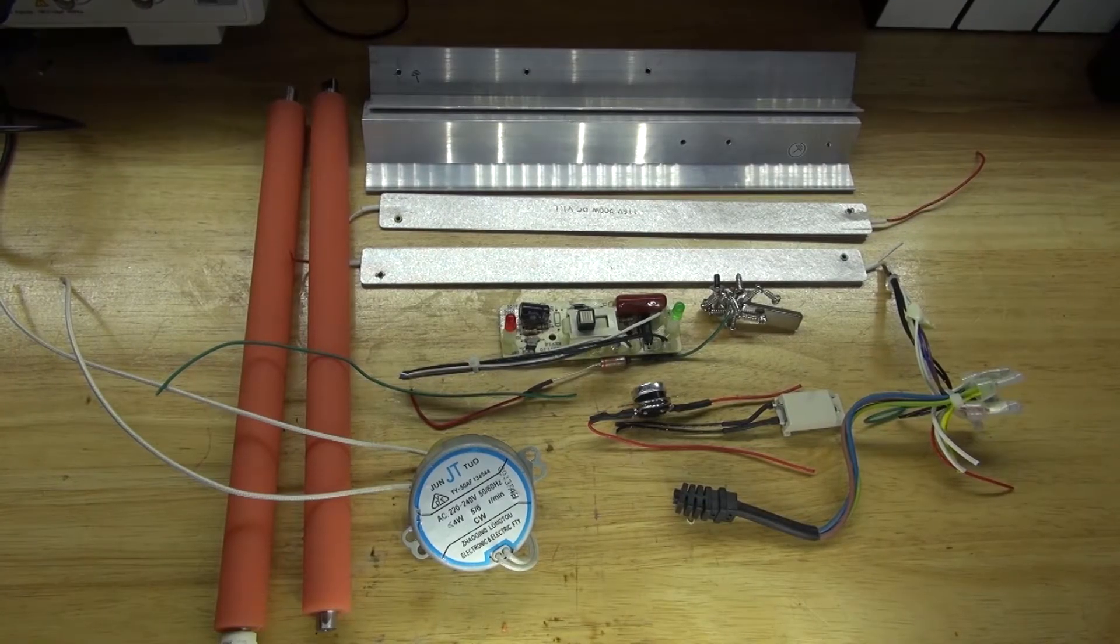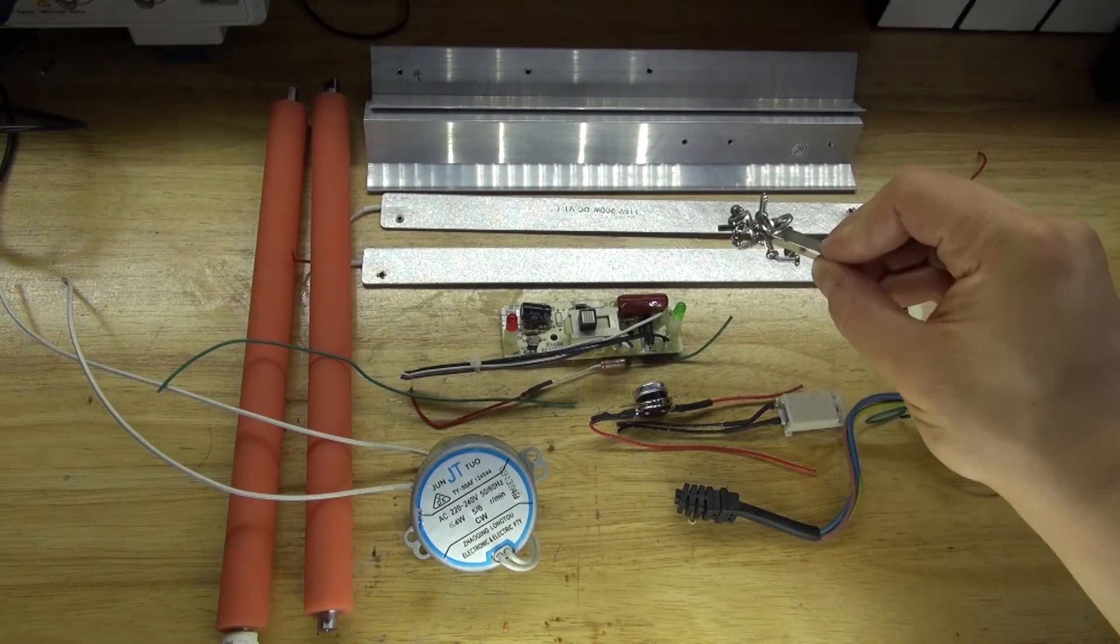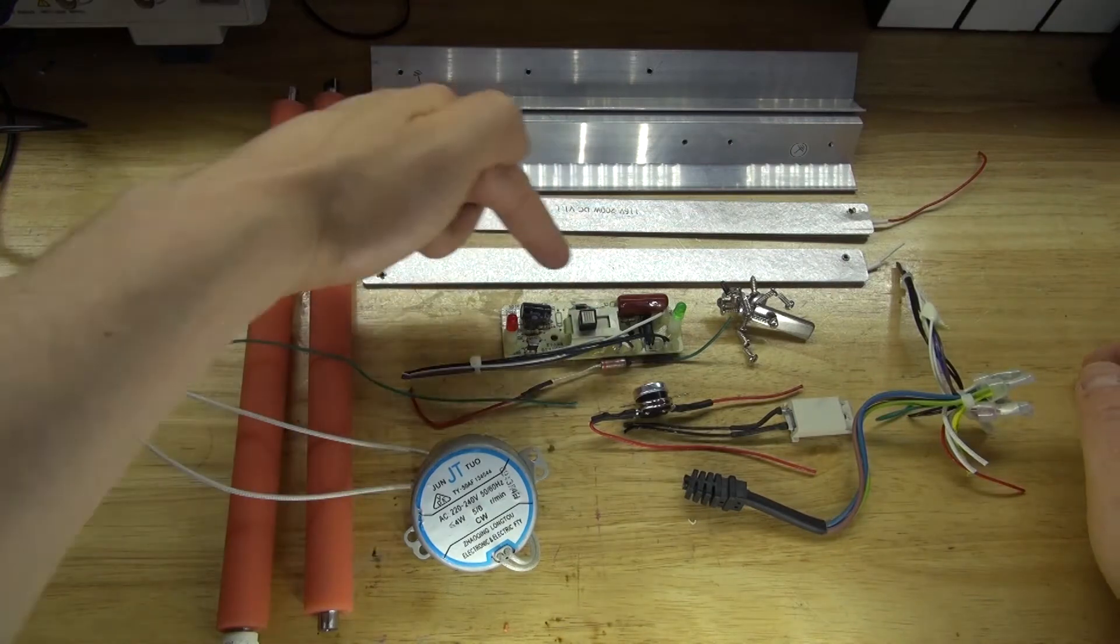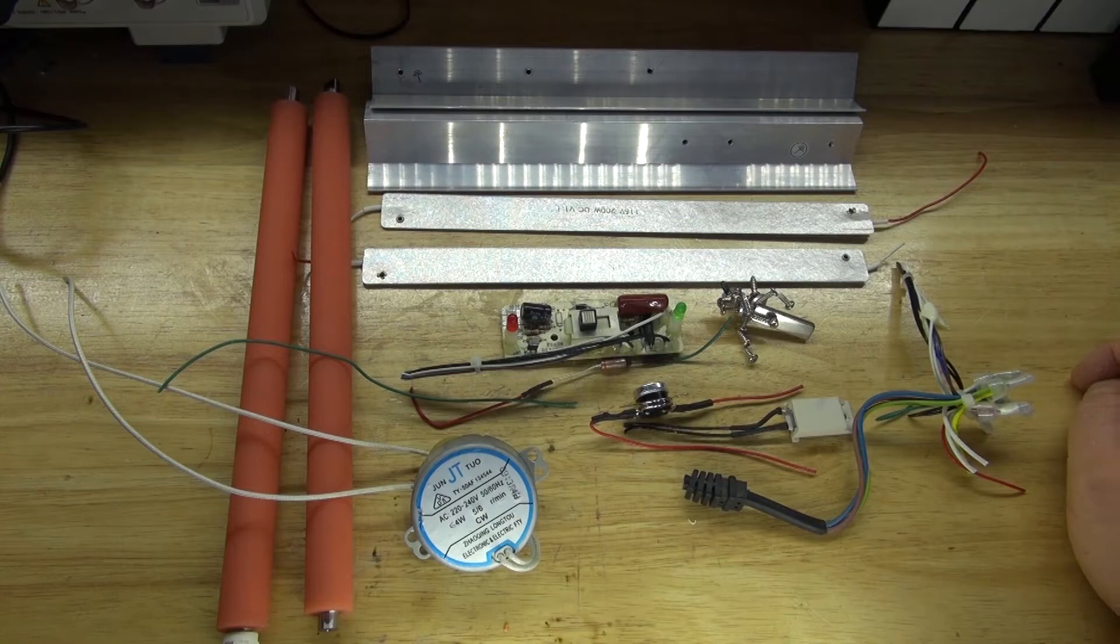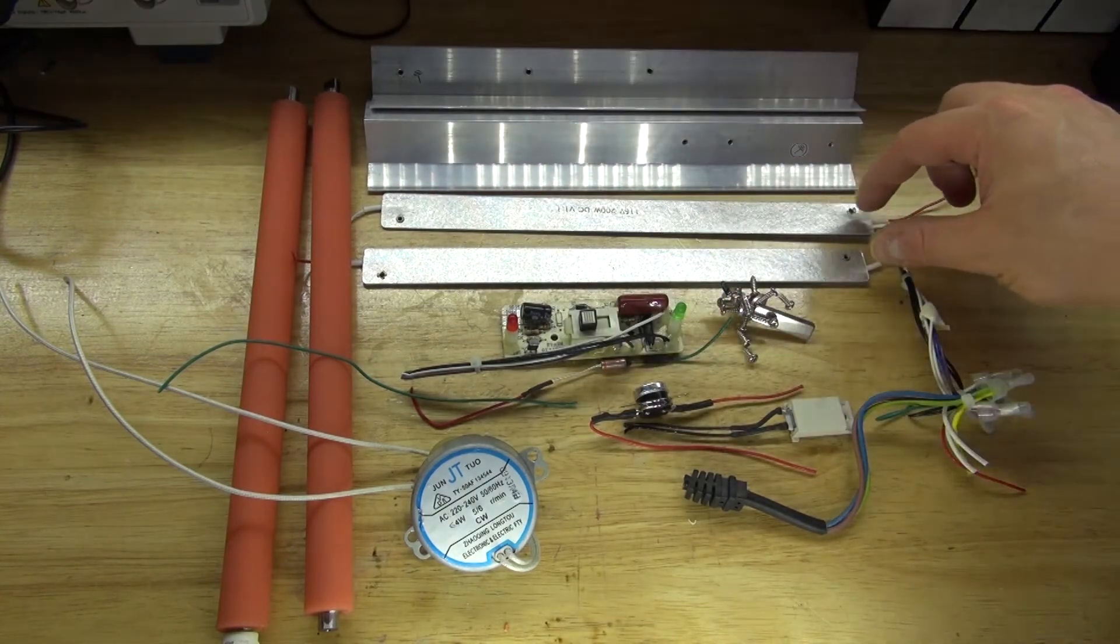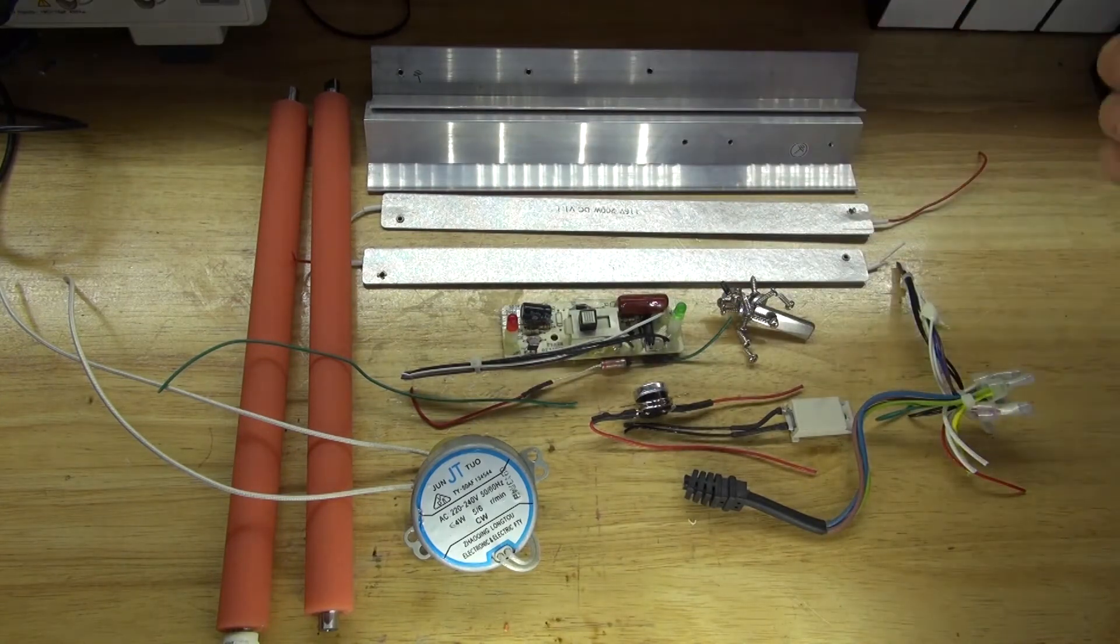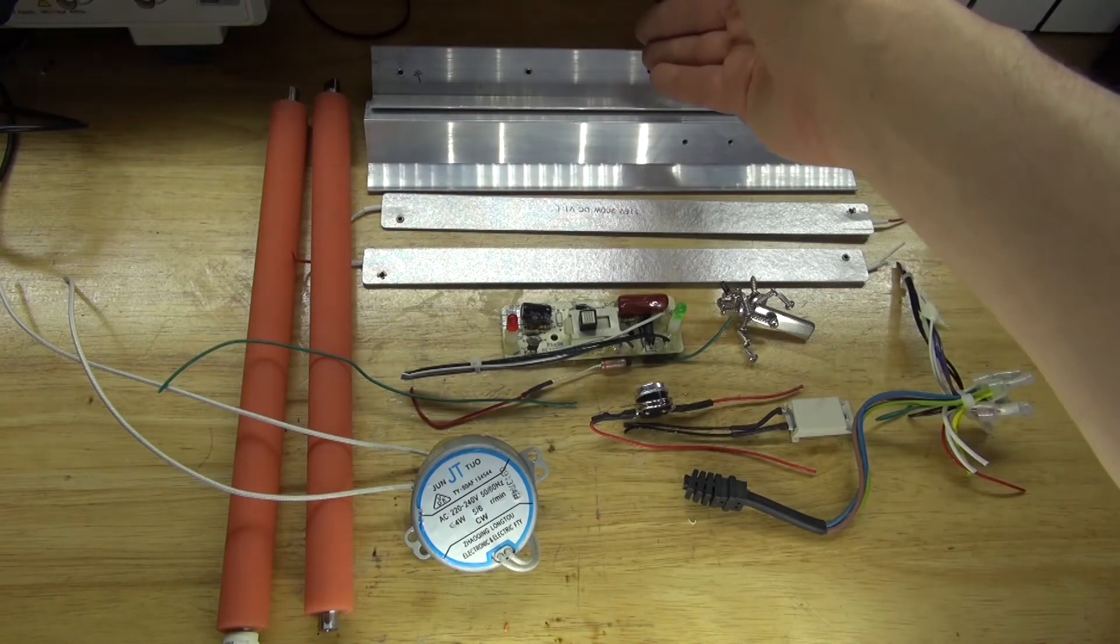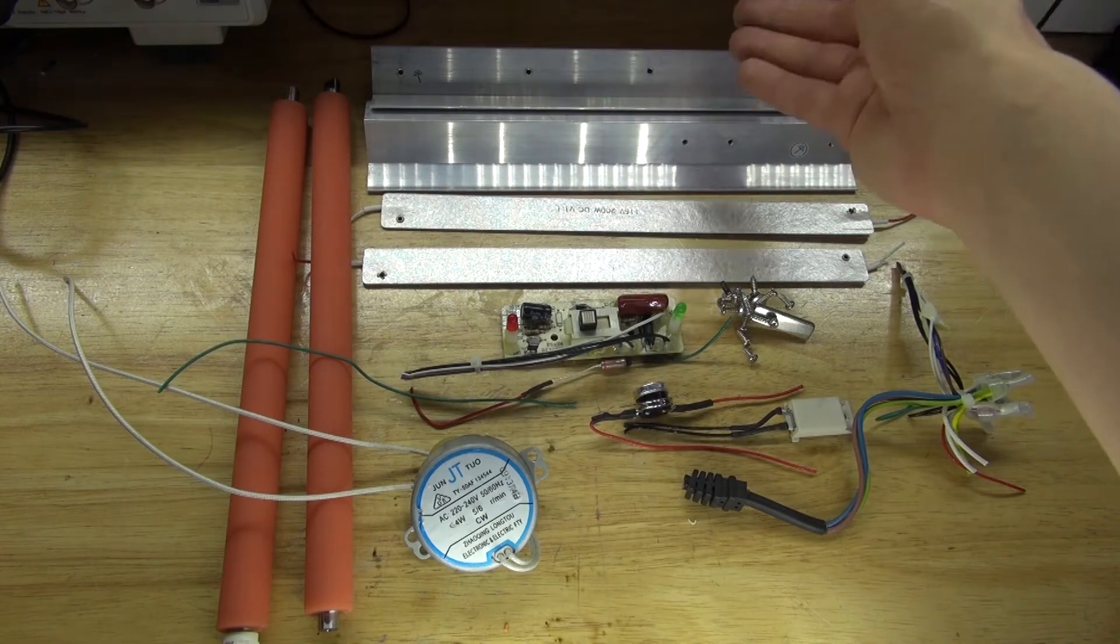And there you have it. This is what I have salvaged from this device. I have right here a bunch of screws that could be very useful for future projects. This little circuit here has a bunch of interesting components that can be very useful. These heating elements can be useful for something. Not sure what but I can use it. These pieces of aluminum could potentially be useful as a heat sink or turn it into scrap and just melt it into something else.